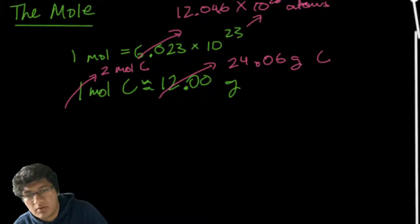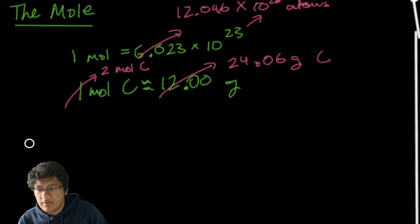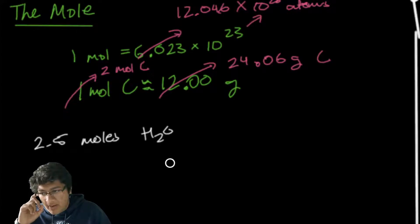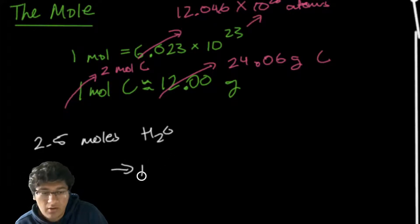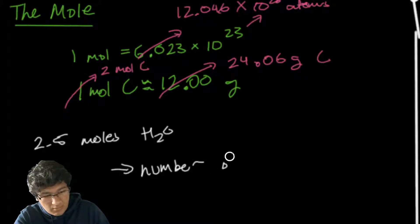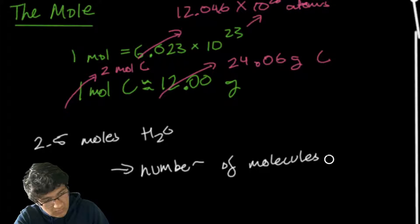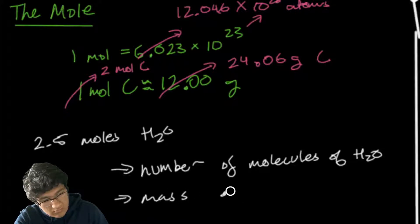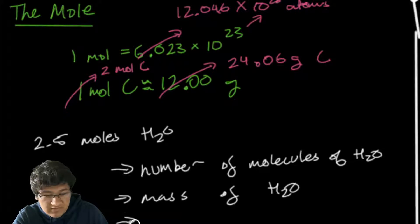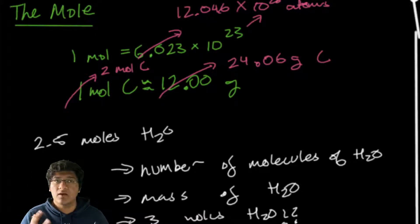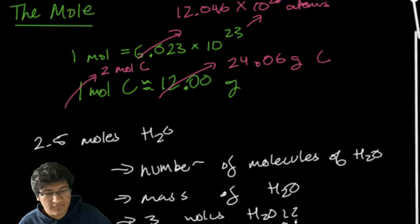Let me give you an example — pause the video and try to solve it yourself. Say I have 2.5 moles of H₂O. Find the number of molecules of H₂O and the mass of H₂O. What would these two values be if I bumped it up to 3 moles of H₂O? Pause the video now and take a minute or two to solve these questions.